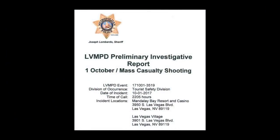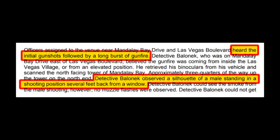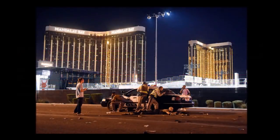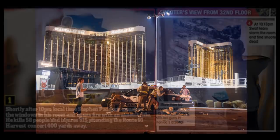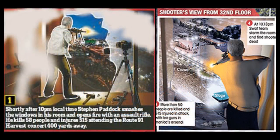Secondly, it raises the question of how this relates to the LVMPD report, in which an officer says that he saw a man standing in 32135 sometime after the initial shots. There are two possibilities. Either the officer saw only Paddock's head and the rifle, but not the legs or the floor, and falsely assumed that Paddock was standing. Or, Paddock could have been standing during the first volley when the officer spotted him. Later on, Paddock knelt or lay down and hid behind the pillar, because the probability of cops bringing in snipers increased.